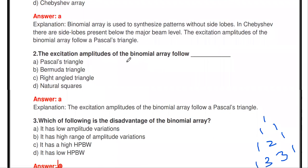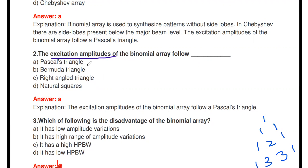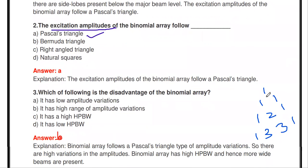The next question: the excitation amplitudes of the binomial array follow what pattern? The binomial array consists of n elements — two, three, four elements of similar antennas — each excited by a specific amplitude. The excitation amplitudes of the binomial array follow Pascal's triangle. For one element: ratio is 1. For two elements: 1:1. For three elements: 1:2:1. For four elements: 1:3:3:1.